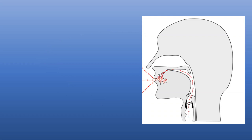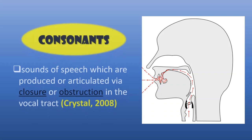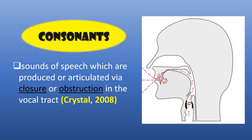After the airstream produced in the lungs passes through the larynx, it goes through the mouth and the nose. Consonants are the sounds of speech which are produced or articulated via closure or obstruction in the vocal tract, according to Crystal in 2008.